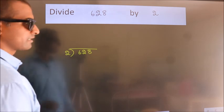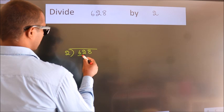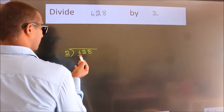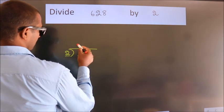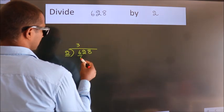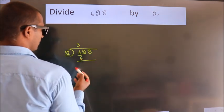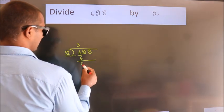Next, here we have 6, here 2. When do we get 6 in the 2 table? 2 threes, 6. Now we should subtract. We get 0.